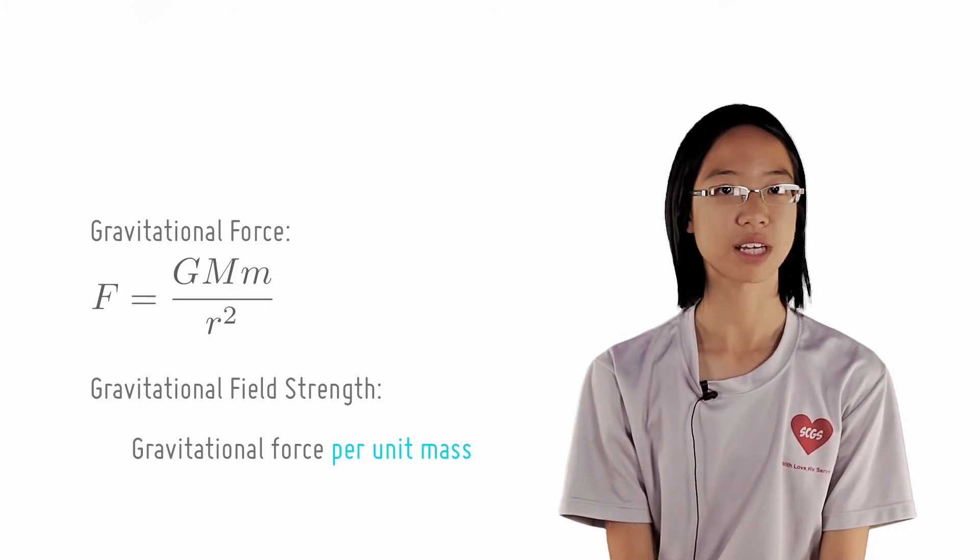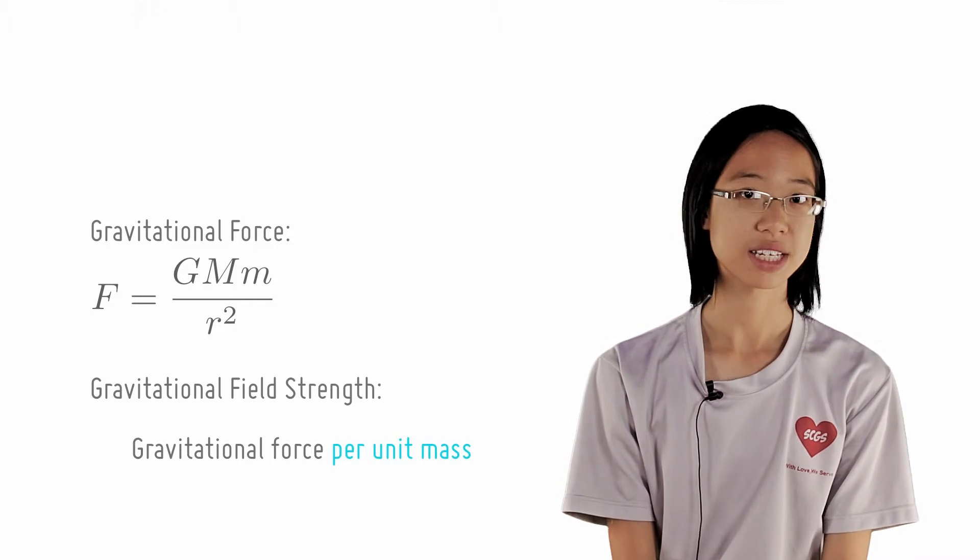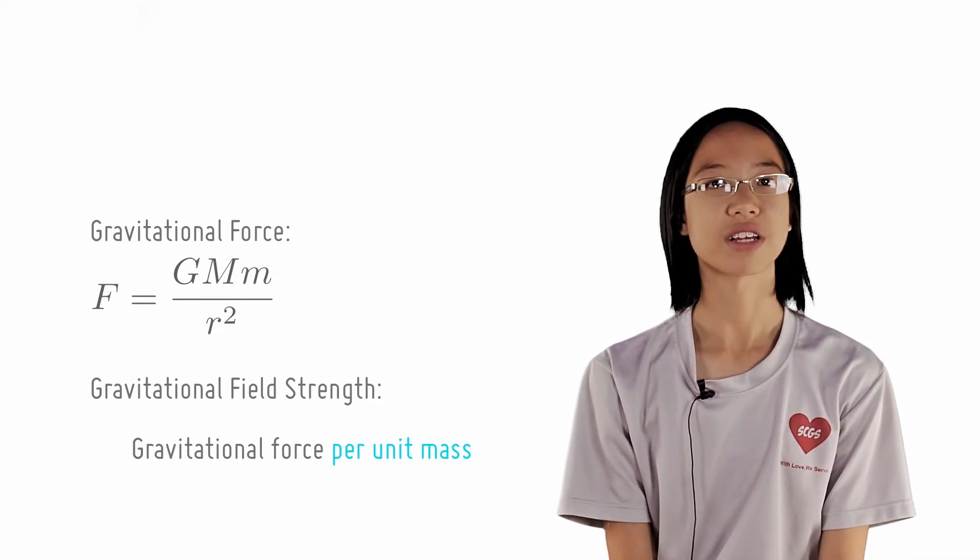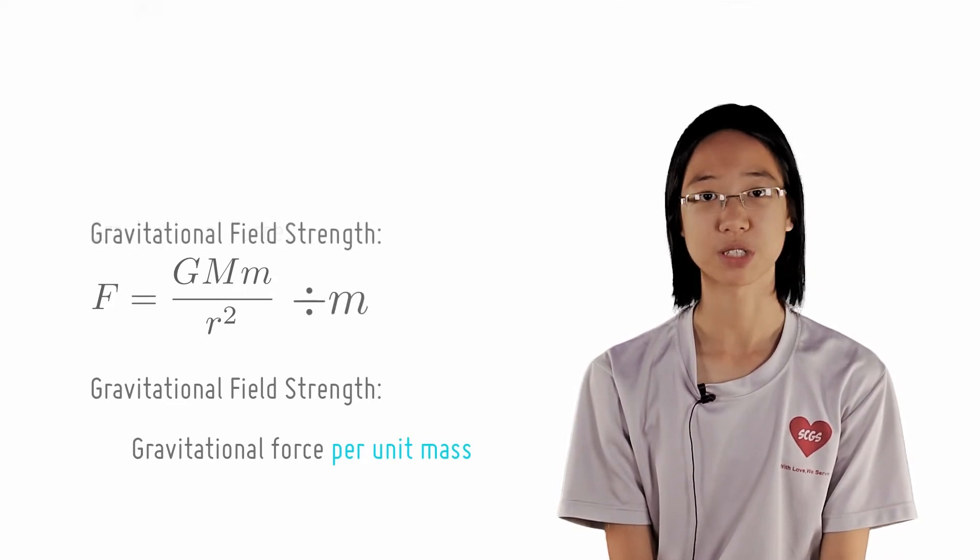Well, do not be confused with the terminology. Gravitational field strength is for a unit mass, and hence, to calculate gravitational field strength, it would be the gravitational force divided by the mass of the object.